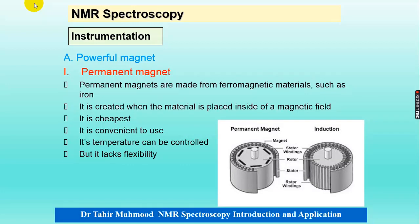The permanent magnet is basically made of ferromagnetic material like iron and has a circular shape as shown in the diagram — the sample is placed inside it. It is the cheapest and easy to use; temperature can be controlled, but it lacks flexibility. Permanent magnets were used in early instruments.